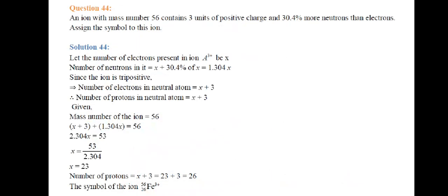Next question: an ion with mass number 56 contains three units of positive charge and 30.4 percent more neutrons than electrons. Assign the symbol to this ion. Let the number of electrons in the ion be x. Then neutrons = x + 30.4% of x = 1.304x.